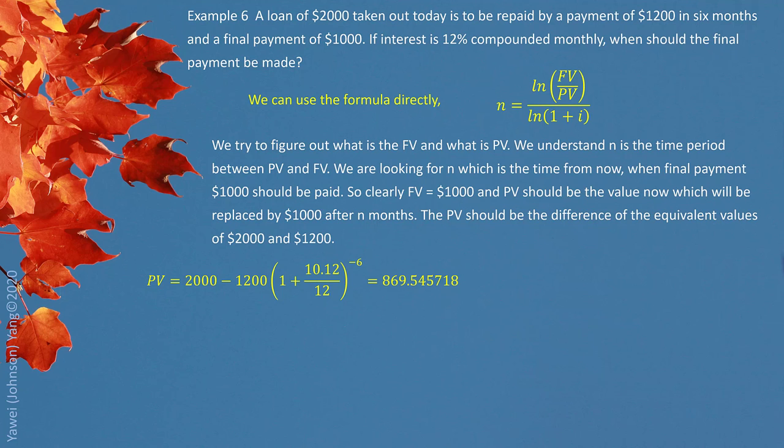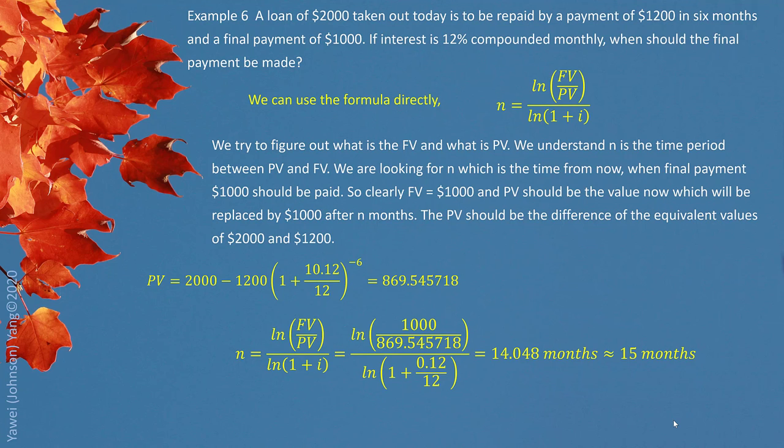Present value comes from $2,000 minus equivalent value of $1,500, which is six months ago. So gives us $869.55. With using this value as present value, $1,000 as future value. From the formula, we find out the answer is 14.048 months. If we really want to answer the whole number, we still have to round it up as 15 months.